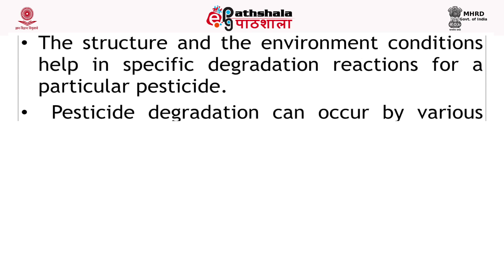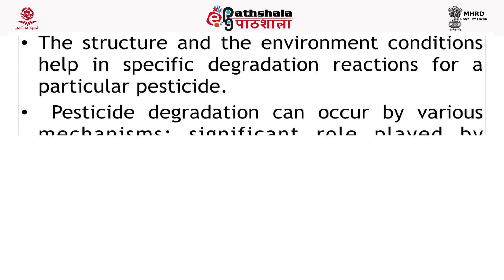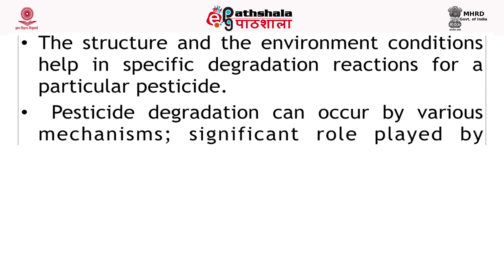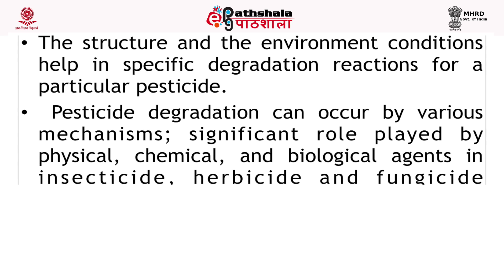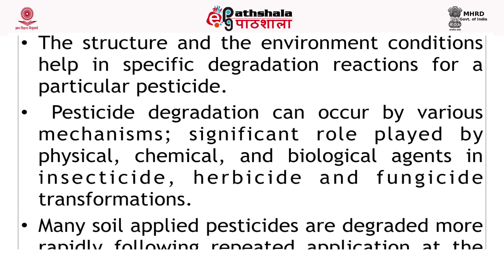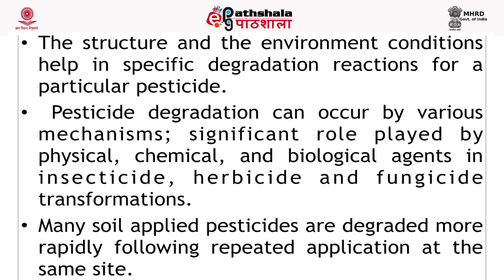The redox gradients in soil sediments and aquifers are occasionally used to deduce the type of transformation that can occur. Similarly, photochemical transformation requires sunlight available only on the surface layer of lakes or rivers, plants or sub-soil layers. Accumulation of biodegradation transformation intermediates occurs when the enzyme reaction rate decreases, affecting the production of intermediates. Pesticide degradation can occur by various mechanisms, with significant roles played by physical, chemical and biological agents in insecticide, herbicide and fungicide transformation. Many soil-applied pesticides are degraded more rapidly following repeated application at the same site.